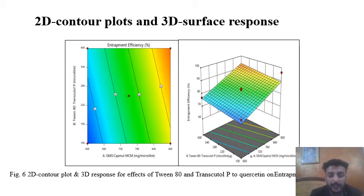This is the contour plot for entrapment efficiency of quercetin. Whenever there is increase in Tween 82 to transcutol, entrapment efficiency is increasing.